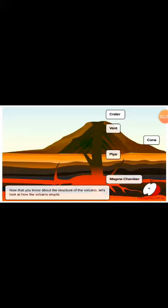Now that you know about the structure of the volcano, let's look at how the volcano erupts. Magma comes up the pipe through the vent and erupts.